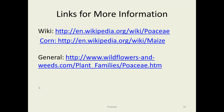For more information, there's Wikipedia, with pages on the Poaceae, corn, sugar cane, and various other Poaceae species. There's also a nice wildflowers and weeds site that has a lot on the Poaceae. That concludes the overview of the grass family Poaceae.